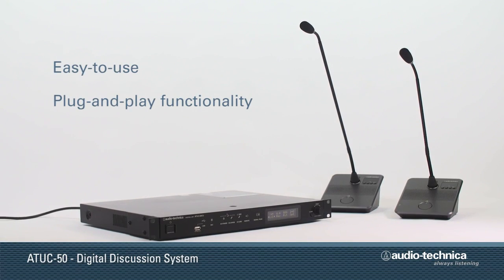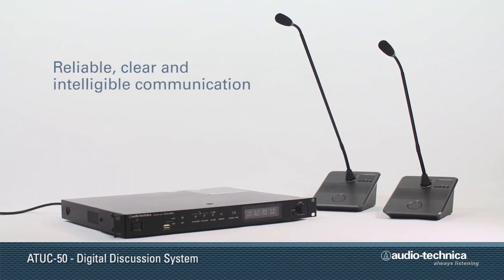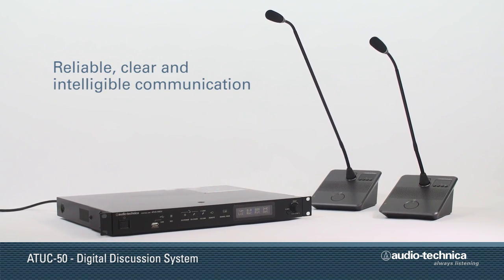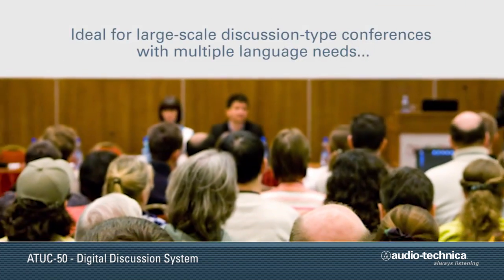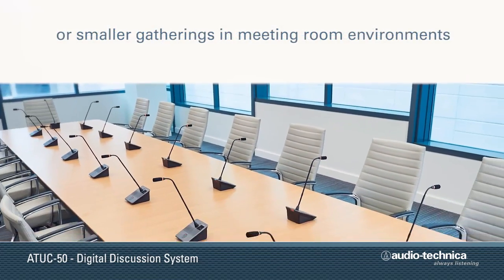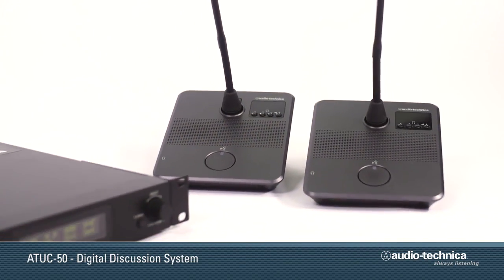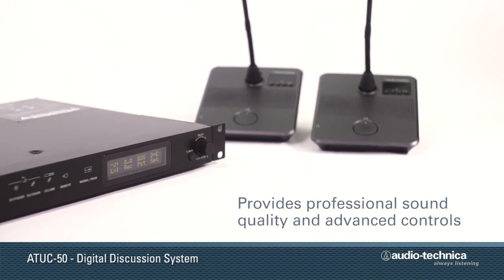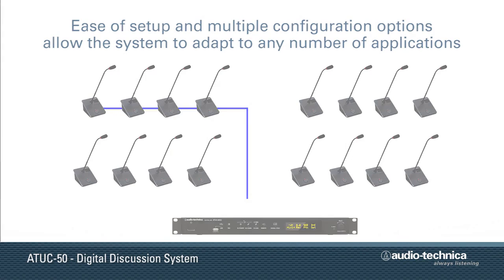Featuring easy-to-use plug-and-play functionality, the ATUC50 Digital Discussion System provides reliable, clear, and intelligible communication to significantly increase meeting efficiency and effectiveness. Ideal for large-scale discussion conferences with multiple language needs or smaller gatherings in meeting room environments, the ATUC50 system is designed to be easily configured and reconfigured while providing professional sound quality and advanced controls. Its ease of setup and multiple configuration options allow the ATUC50 to adapt to any number of discussion applications.